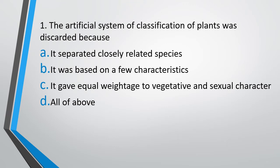There was a system of classification called the artificial system of classification meant for plants which was used earlier but has now been discarded. You have to tell which of these is the correct reason for the discarding. The correct answer is Option D, All of the above. The artificial system separated closely related species into different classes, was based on very few characteristics, and gave equal weightage to vegetative and sexual characters, which is not correct.